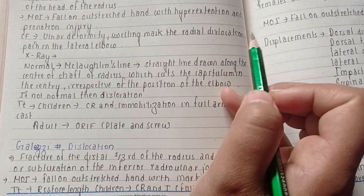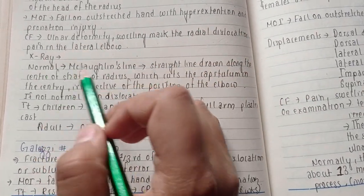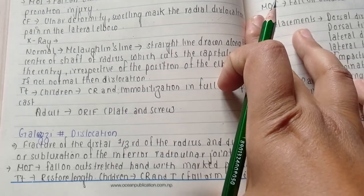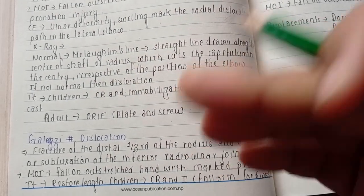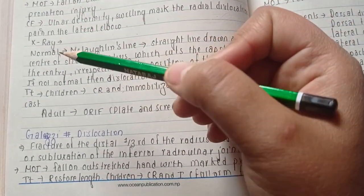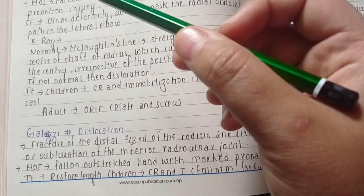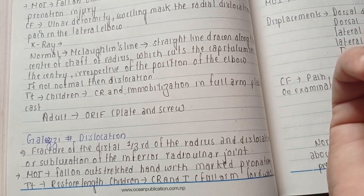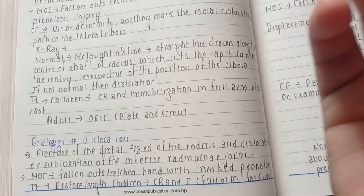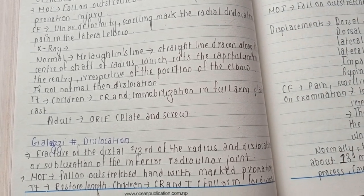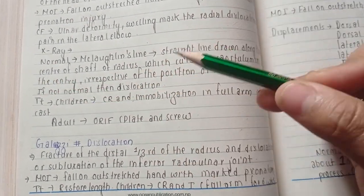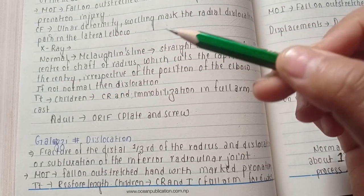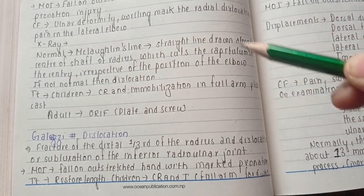...which marks the radial dislocation, and there is pain in the lateral elbow. Then we have X-ray findings. In X-ray findings, the normal finding - let's talk about it first. So we have McLaughlin's line, which is the straight line when drawn along the center of the shaft of the radius. It cuts the capitulum in the center, irrespective of the position of the elbow.